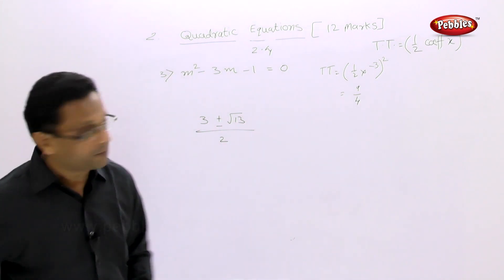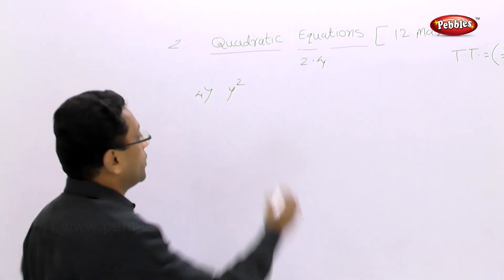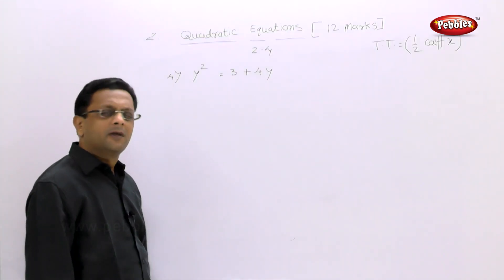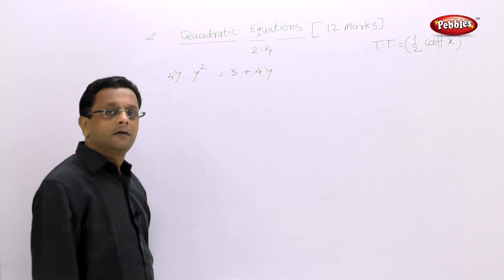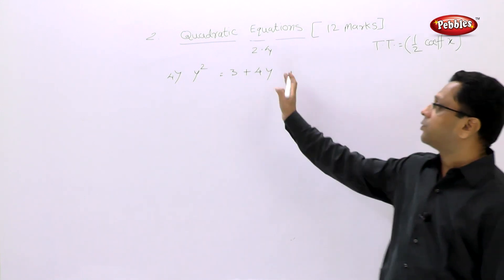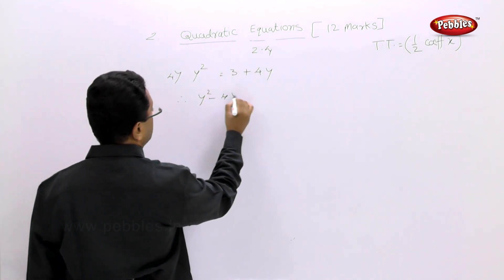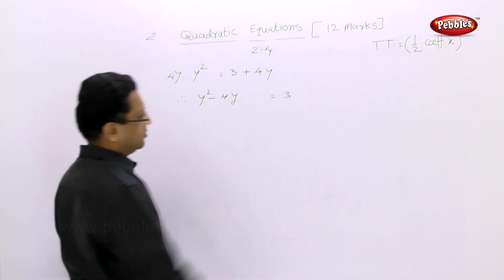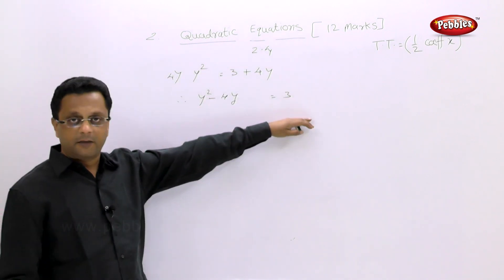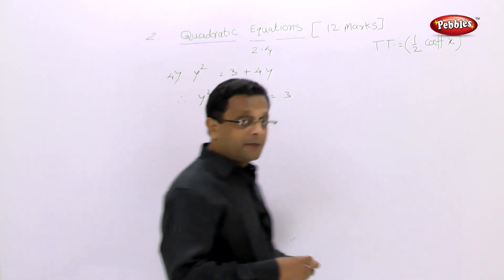Fourth example: y² = 3 + 4y. Rearrange to general form: y² - 4y = 3. Only y² and 4y should be on the left side and the rest on the right side, so you can come straight to y² - 4y = 3 without writing the zero step first.